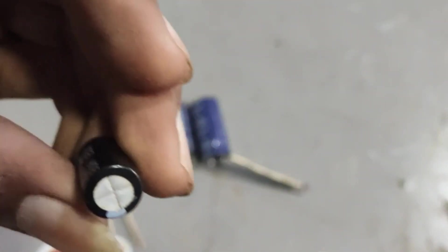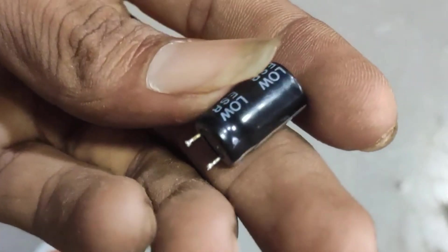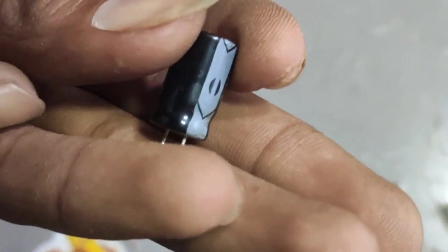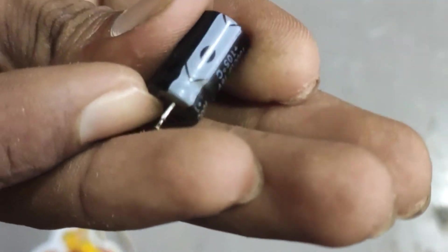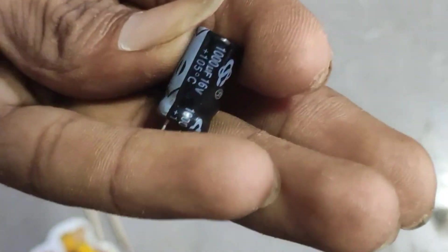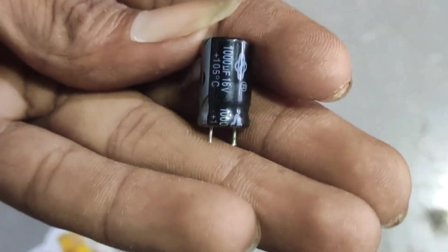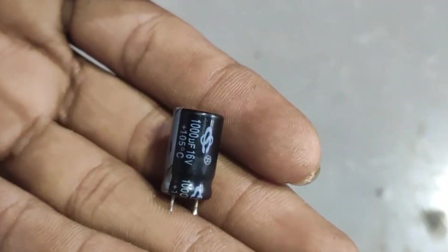And the third thing is reverse voltage, which means that if you connect a negative lead to its positive terminal and positive lead to its negative terminal and apply some current, then this thing will start heating up and eventually explode.